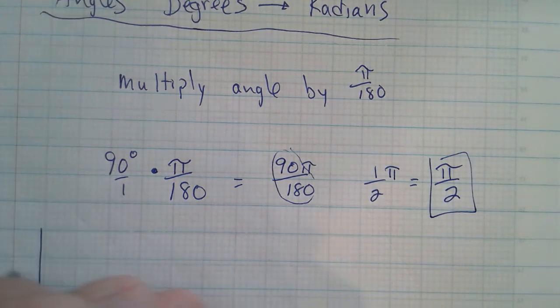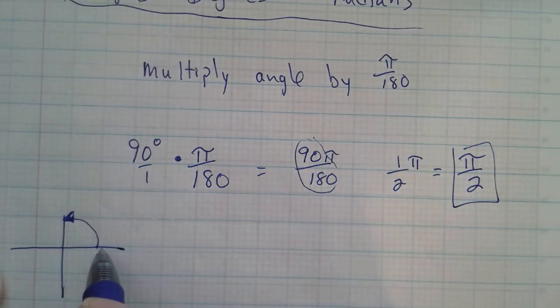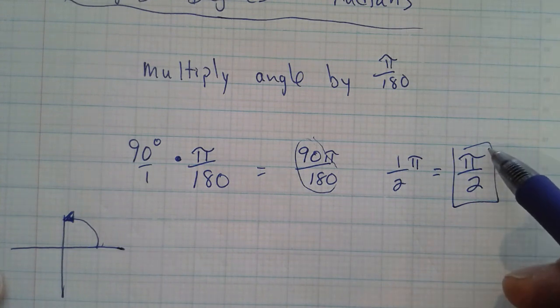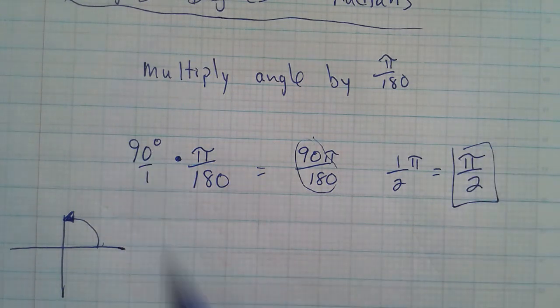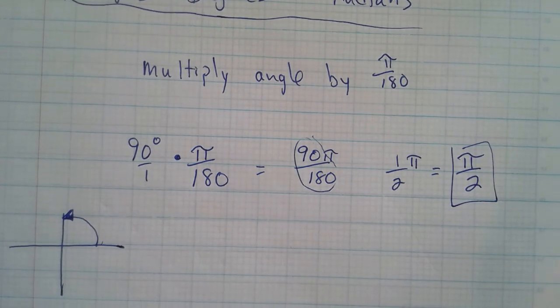So that angle, 90 degrees, is right there. That's 90 degrees. π over 2 in radians is also that angle. It's just a different way of measuring the angle. Notice there's no little degrees sign. If you see an angle that's measured in radians, it won't have a degrees. This will have a degrees.